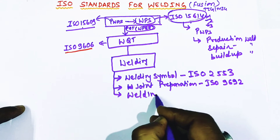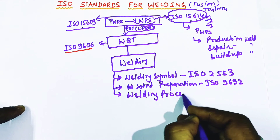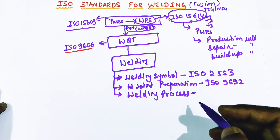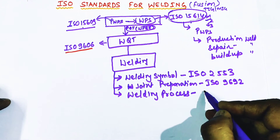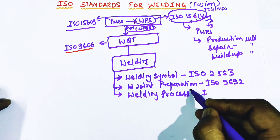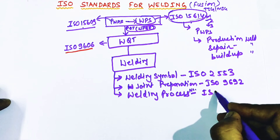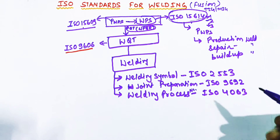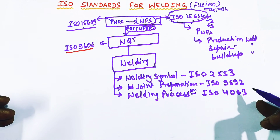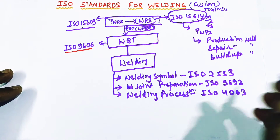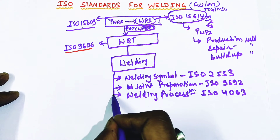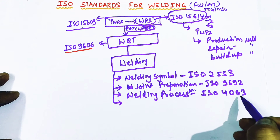The third activity is welding process numbers. In ISO, each and every welding process has a particular number. For shielded metal arc welding there is a particular number, for GTAW there is a particular number. These numbers can be found in ISO 4063.